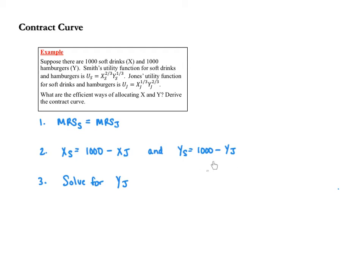We're going to use these equations to substitute into what we have from step one. Finally, we're going to solve for Y Jones. We could have solved for X Jones, or instead solved for X Smith or Y Smith. But the important thing is we're solving for one of the two goods, preferably the good that's plotted on the y-axis, and we're going to do this for just one of the two individuals.